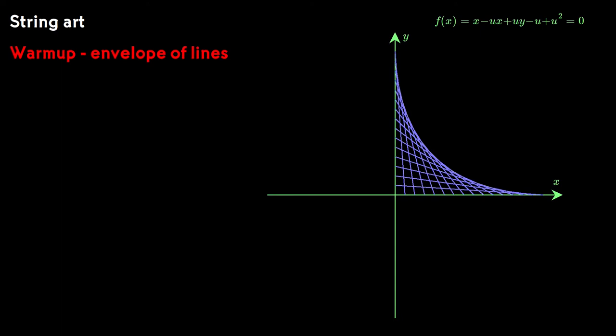So as a warm-up to envelopes, let's look at the simple string art we've been discussing. The formula that we derived for the equations of the individual lines in the pencil is at the upper right. Our first step is to differentiate with respect to the parameter and set the partial derivative to 0.